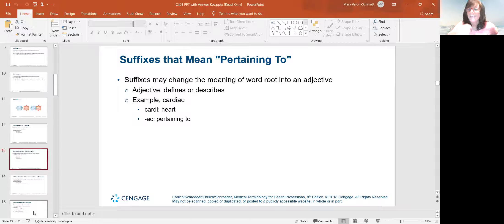Suffixes that mean pertaining to, and this one is very common. It changes the meaning of the word root into an adjective. So it describes it. For example, cardio is heart, and the combining form is cardio. But if we say cardiac, that AC at the end means pertaining to the heart. So cardiac is pertaining to the heart.